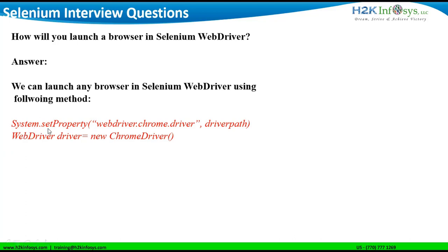The method is System.setProperty, followed by the name of the browser and the path of the driver. The System.setProperty method uses two arguments: the name of the browser that you want the script to be executed in. In this example, I have taken the Chrome browser. If you are executing in a Firefox browser, you will give GeckoDriver. If you are executing in Safari browser, you will give the name as Safari, or Internet Explorer if executing in an IE browser.